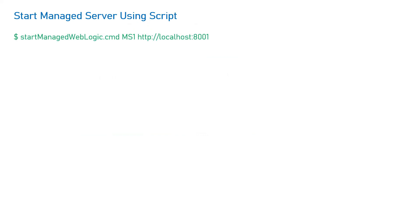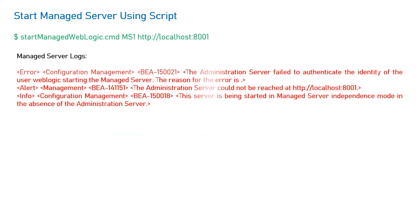Now try to start the managed server with the help of a script — the standard script provided by WebLogic in your bin directory: startManagedWebLogic.sh for Unix-based systems and .cmd for Windows, followed by the managed server name and the URL of your admin server. Once you try to start it, it will fail with the error: "The admin server failed to authenticate the identity of the user weblogic. The admin server could not be reached at localhost:8001 and the server is being started in Managed Server Independent mode in the absence of the admin server."